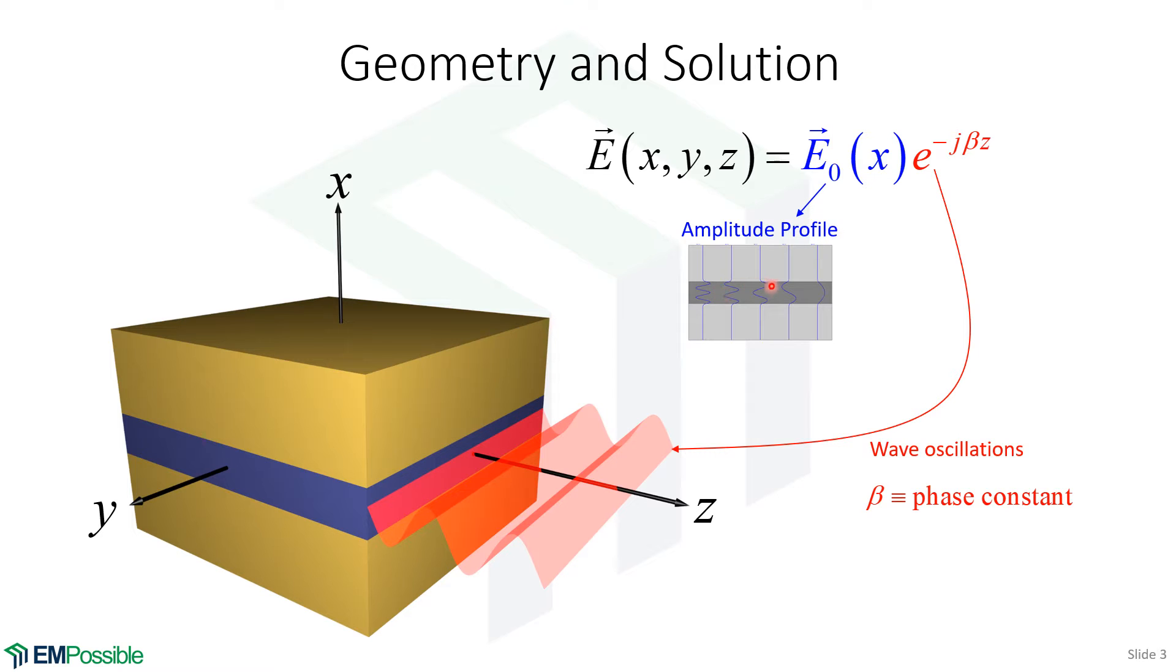Here's some representative examples of what modes in a dielectric slab waveguide might look like. These are different answers to the amplitude profile. Each of these answers will also have its own phase constant.